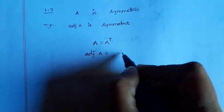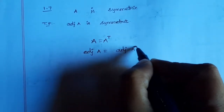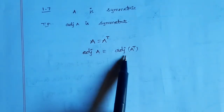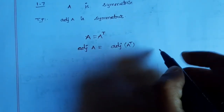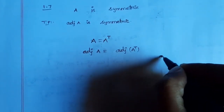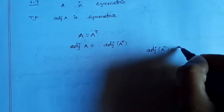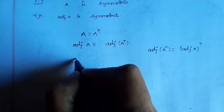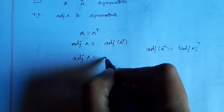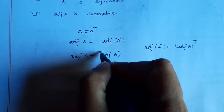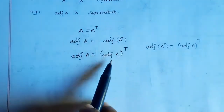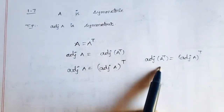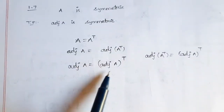Adjoint of A is equal to adjoint of A transpose. We substitute and use Theorem 1.9: adjoint of A transpose is equal to adjoint A, the whole transpose. We apply this theorem here.